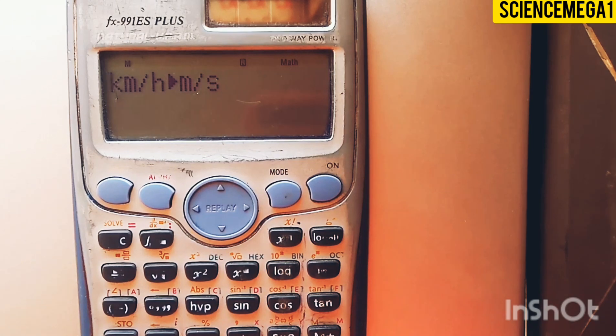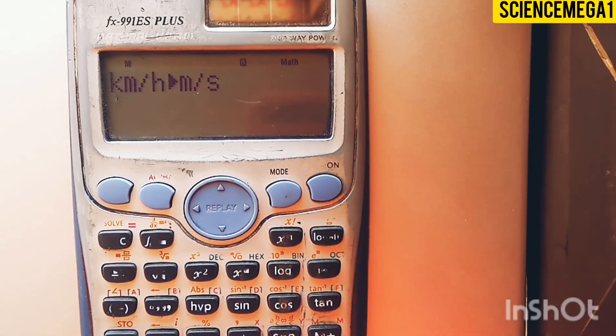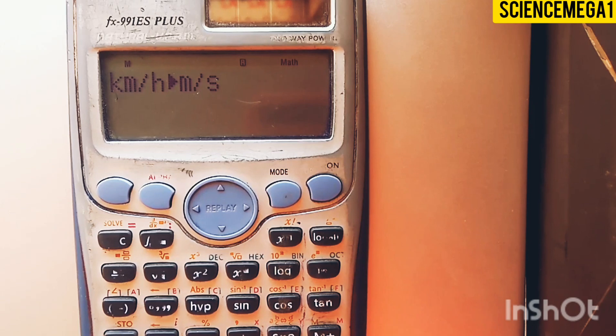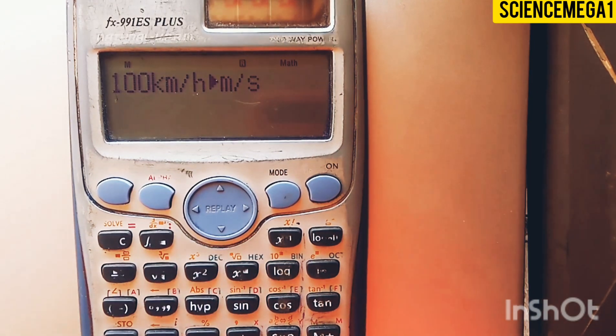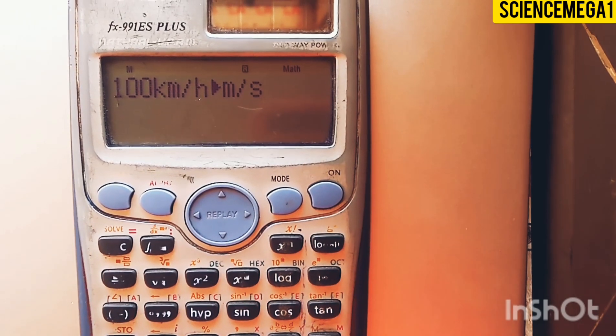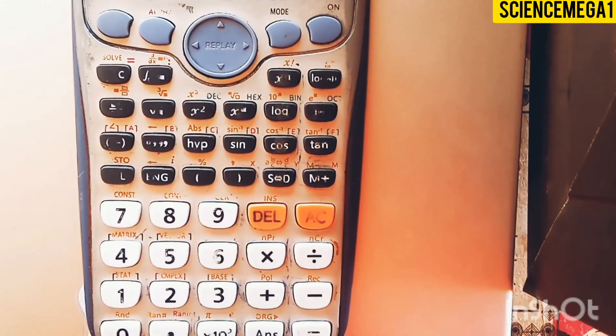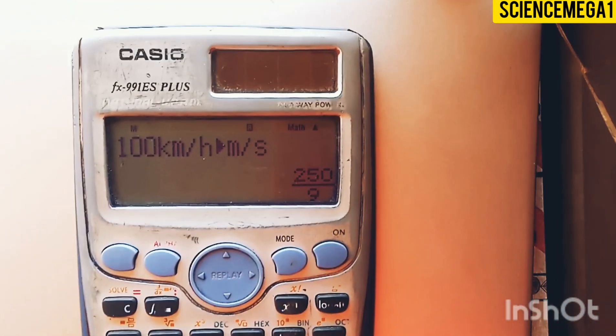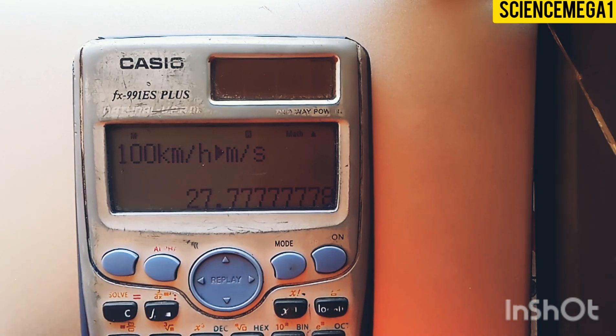First, you enter 100. So this reads 100 kilometer per hour to meter per second, equals 27.7. Thank you, stay tuned for more.